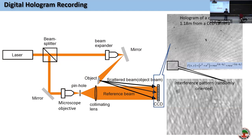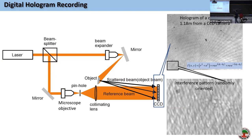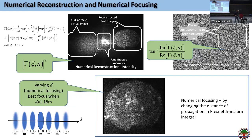Now let me present some results. This is the hologram of a diffuse object — rough objects that scatter in every direction. Since the object is rough, the object wavefront has random phase changes, so the resulting interference pattern is randomly oriented. The basic reflection-mode setup uses the same laser: one beam illuminates the sample, the other acts as the plane-wave reference, producing this interference pattern.